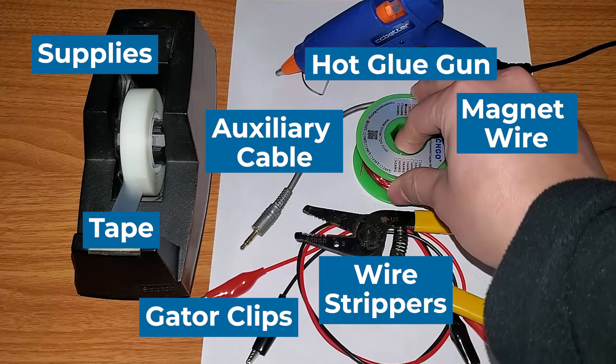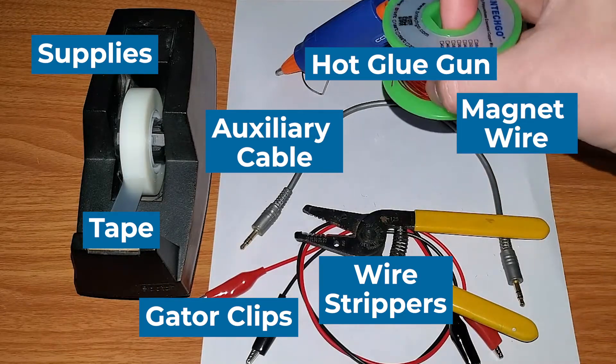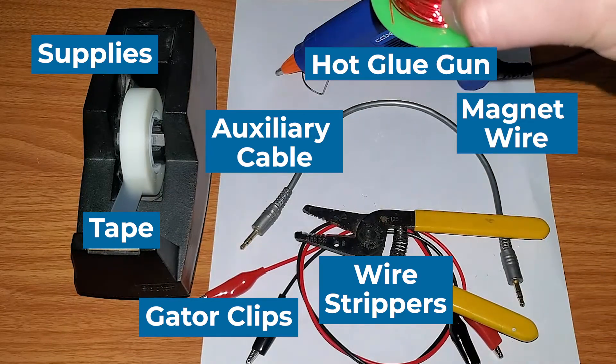I have some magnet wire here. This is 24 gauge. It's pretty thin. You can use any type of copper wire. I would recommend something above 22 gauge though.